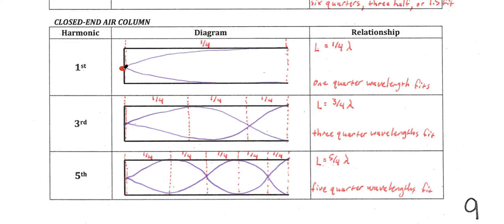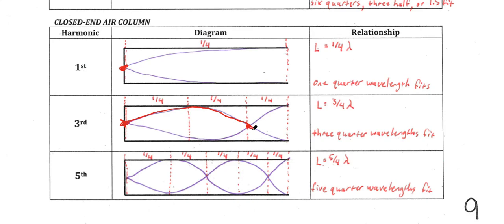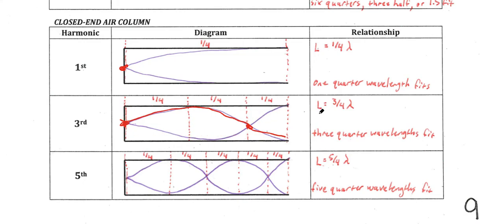For a third-order harmonic, just as with strings or other air columns, we just continue to add nodes. We only had one node in the first harmonic, so for the third-order, we're going to throw a second node in. We've got one half of a wavelength that happens here, and then another quarter of a wave — ending up with a quarter, another quarter, and another quarter, so three quarters total. Our final formula becomes L equals three-quarters wavelength, because there's three-quarters of a wavelength that fit within the length of this tube.